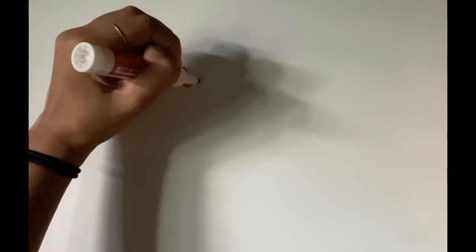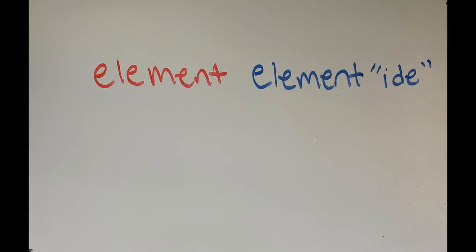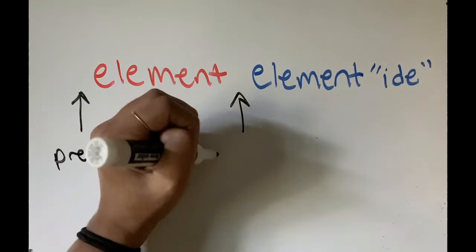Oh, so you would write the name of the first element and the name of the last element with the ending changed to IDE? Exactly. If certain elements can make up multiple compounds, you just have to add the appropriate prefix in front of each element so you know which compound it is.